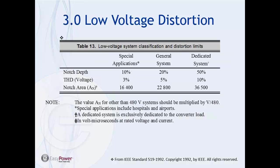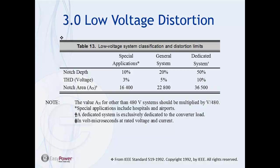Looking at Table 13 for the first set of limits in IEEE 519, we see three rows: notch area, notch depth, and THD for voltage distortion. Under special applications like hospitals and airports — critical infrastructure — they recommend no higher than 3% THD. For general systems, don't go above 5% voltage THD. For a dedicated system, such as a dedicated transformer feeding only adjustable speed drives, you can exceed 5% and go up to 10%.